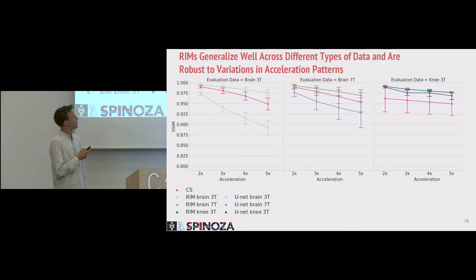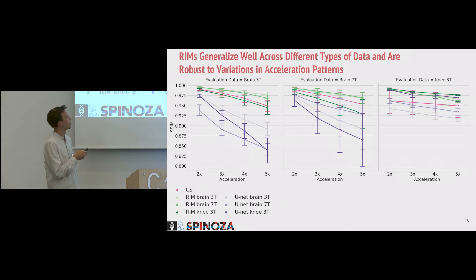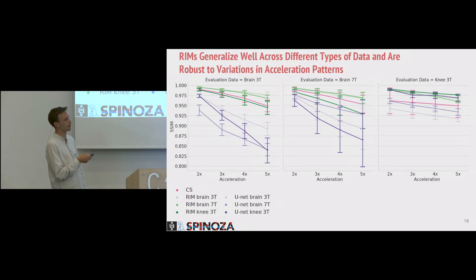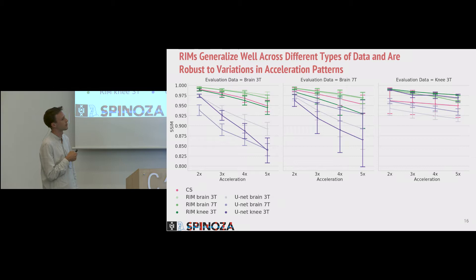These models are all trained and evaluated on the same type of images. But when you train on one dataset and evaluate on another, how does the model do? The RIMs trained on brain data can evaluate on brains either way, and going from brains to knees is not a huge issue — it does fairly well. However, training on knee data does worse than compressed sensing when evaluating on brains. For the U-Net, overfitting is more pronounced: training on one type of brain and evaluating on another shows a noticeable drop in performance.